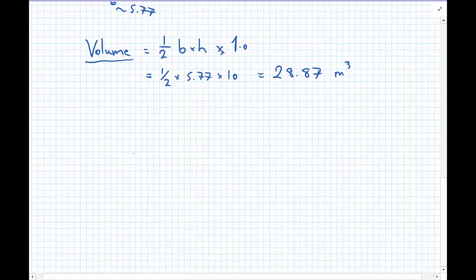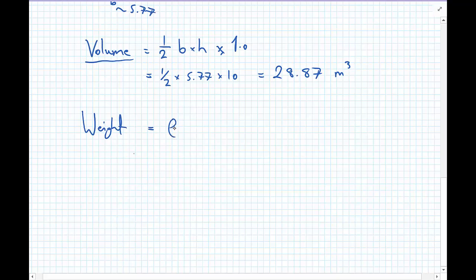And now we have the volume, we can calculate the weight. So the weight is equal to the mass density, that's kilograms per meter cubed, multiplied by the volume, meters cubed, so that gets us kilograms. So we then need to multiply again by G, to get us to a weight in newtons, or kilonewtons. So we have 1025, multiplied by the 28.87 meter cubed, and multiplied by 9.81. Let's divide by 1,000 to get us into kilonewtons. And we get the weight is 290.3 kilonewtons.